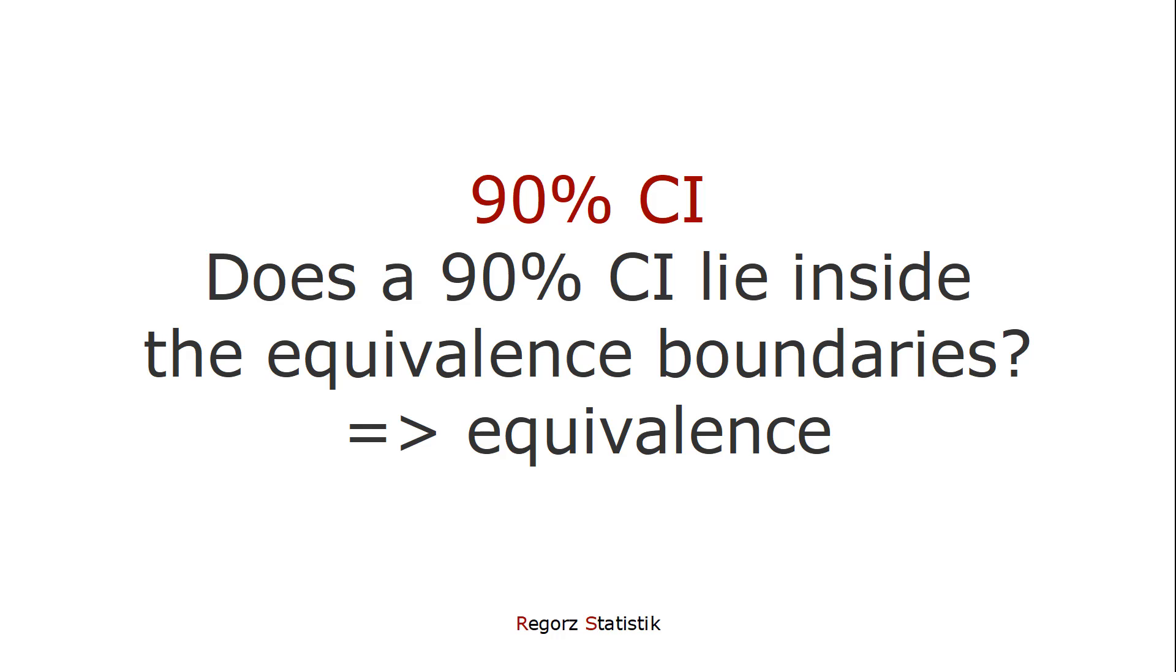then we know our correlation is significantly smaller than the upper bound and at the same time significantly higher than the lower bound, and thus equivalent to zero.